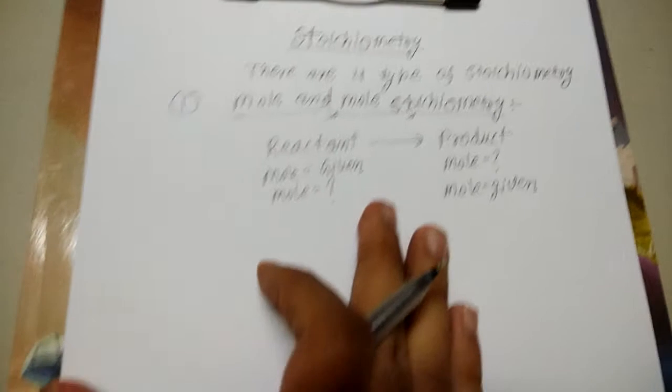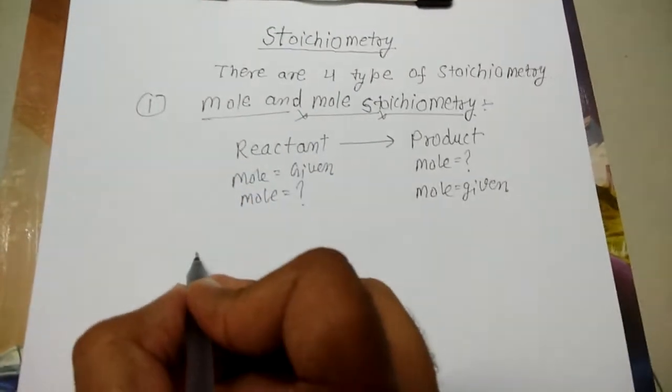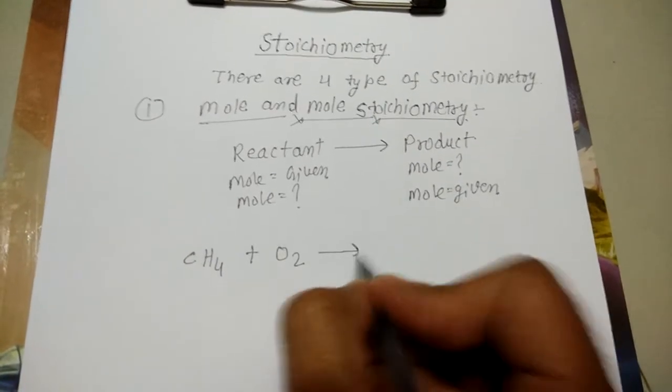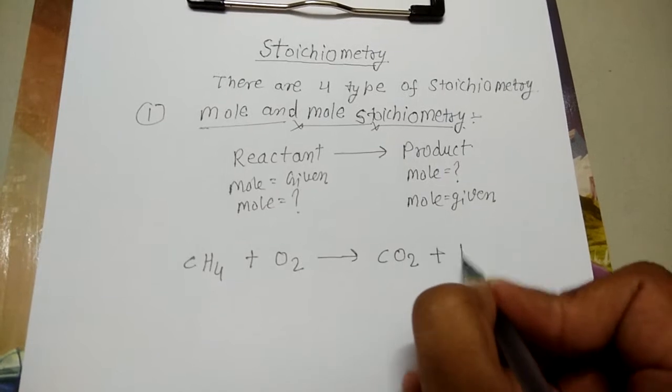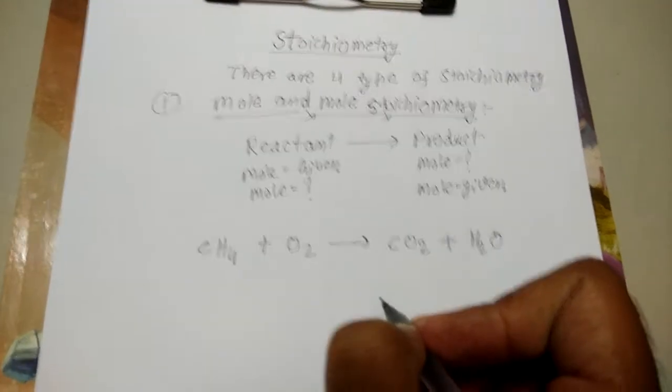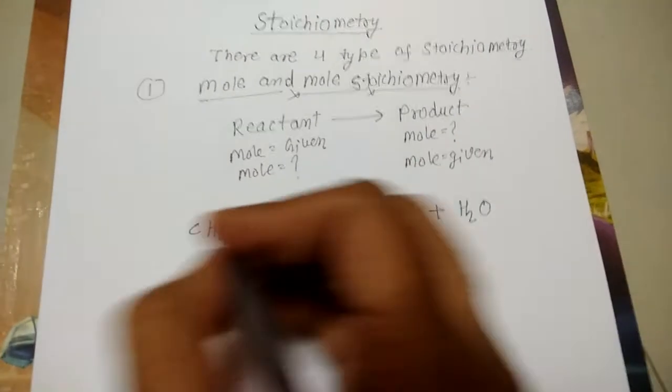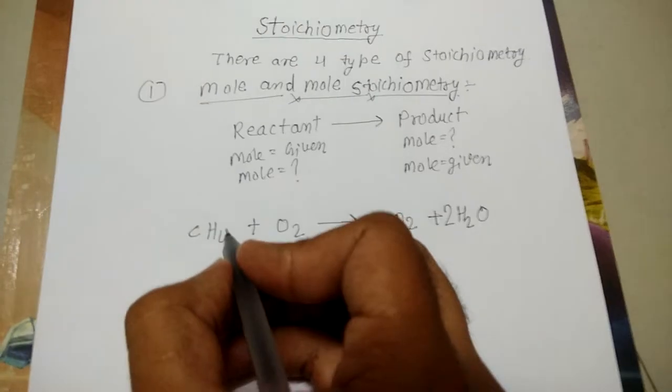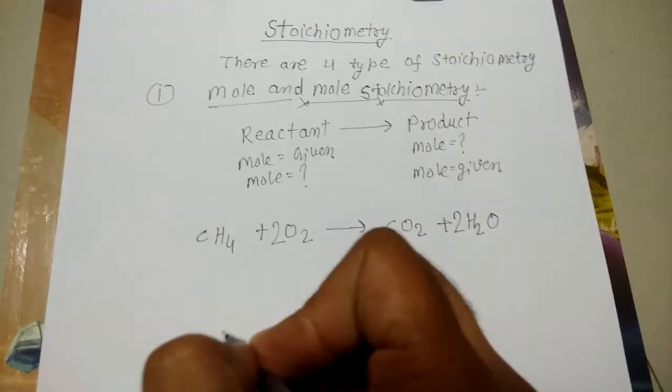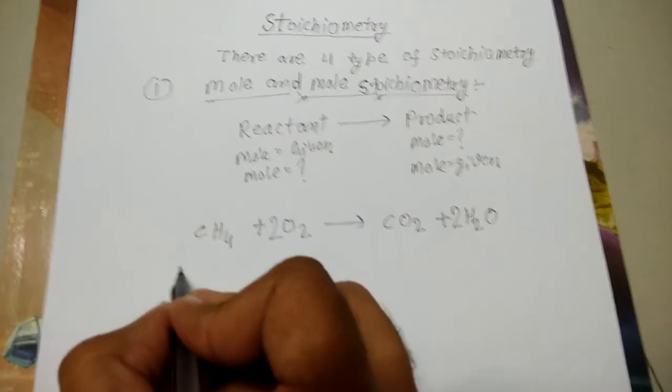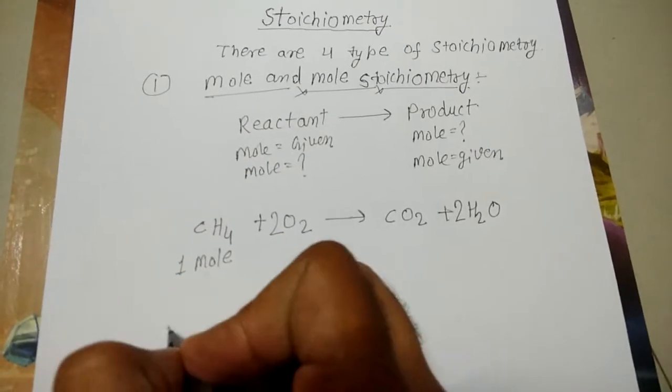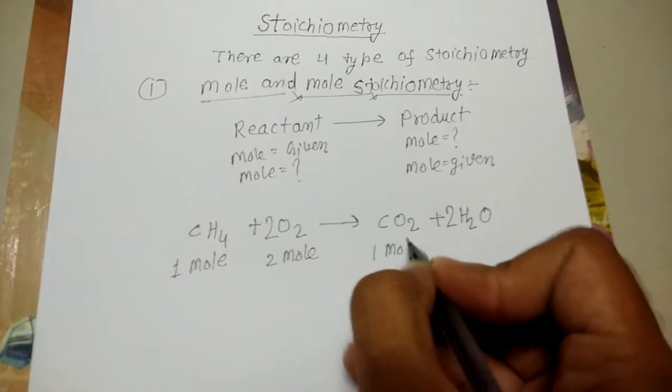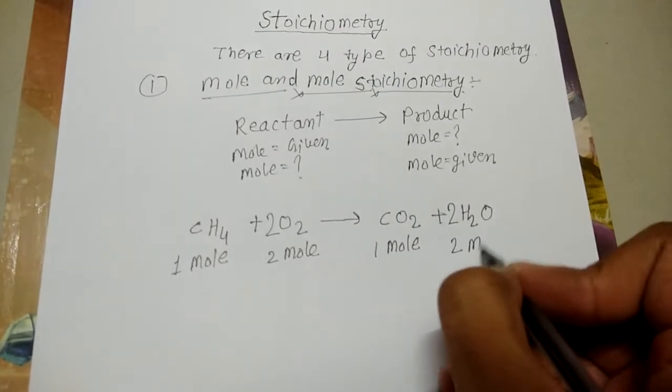Suppose one example: methane gas reacts with O2 to give CO2 plus H2O. The equation must be balanced. We balance the oxygen molecule - 2 moles of water with 2 moles of oxygen. In this reaction, 1 mole methane and 2 mole oxygen gives 1 mole CO2 and 2 mole of water.